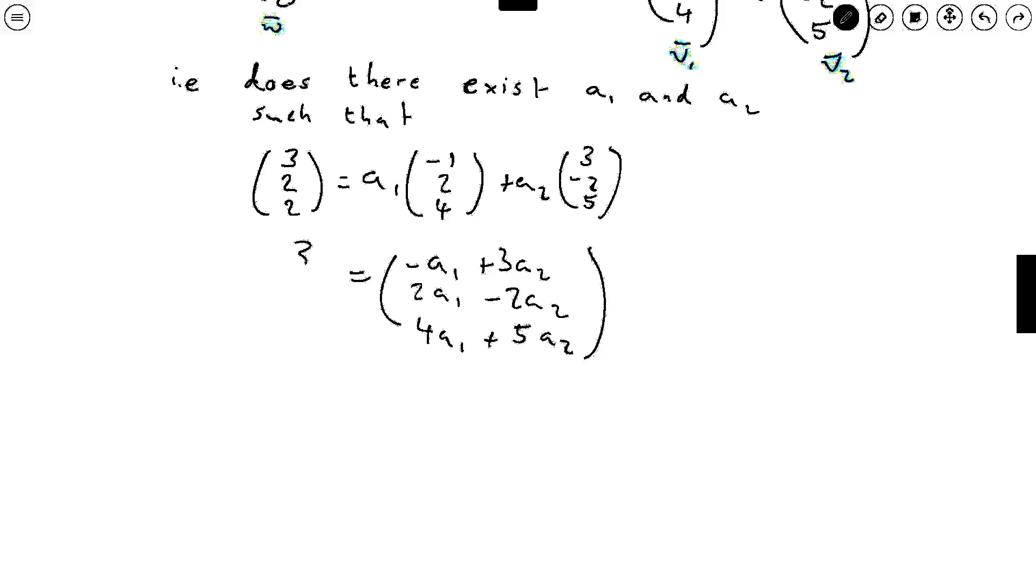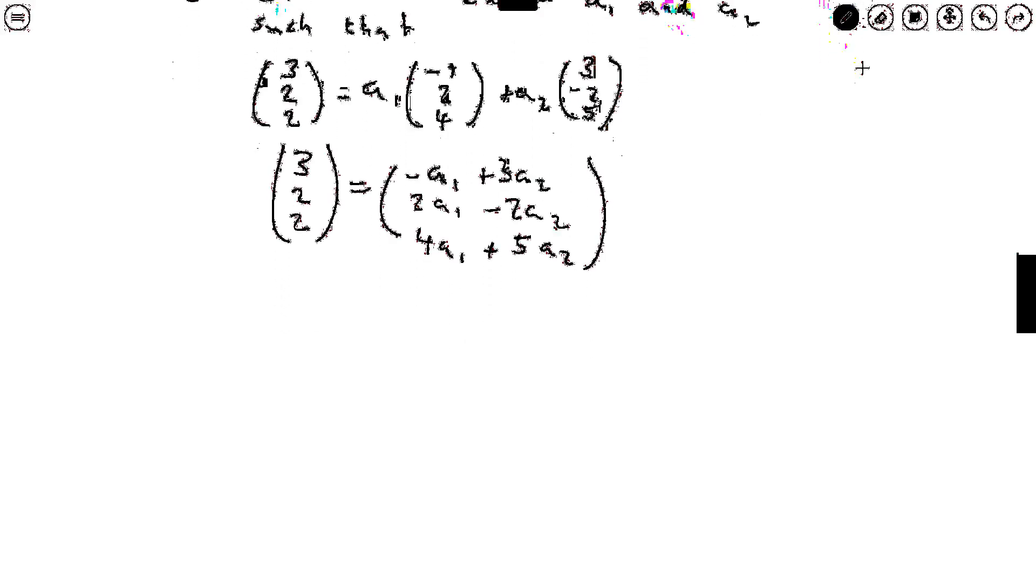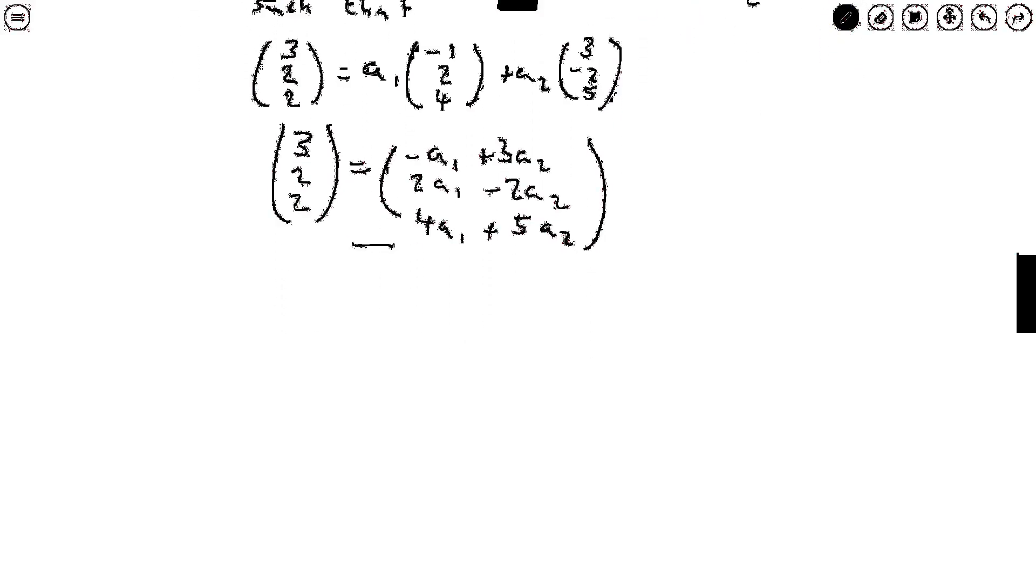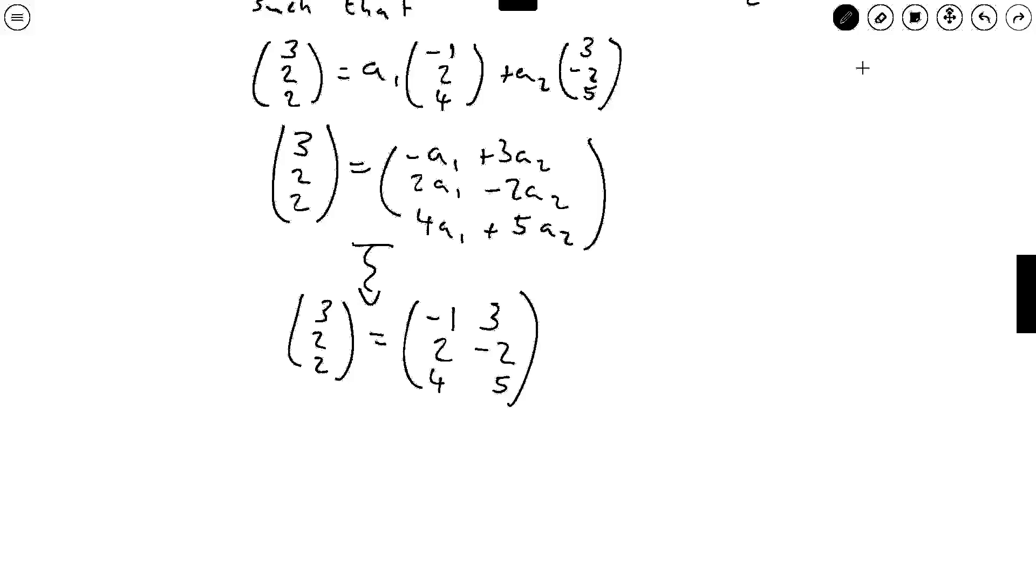So we see indeed this is again a system of linear equations. If you've seen our video on linear independence this should remind you a bit of it because from here we do the same thing as we do in that video and change this into a matrix equation of the form (3,2,2) is equal to the matrix [-1,3; 2,-2; 4,5] applied to the vector (a1,a2).